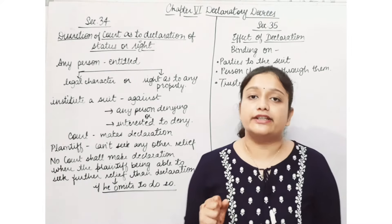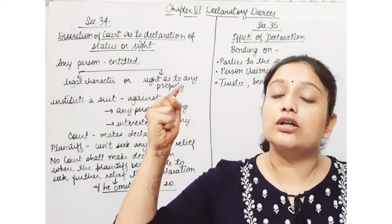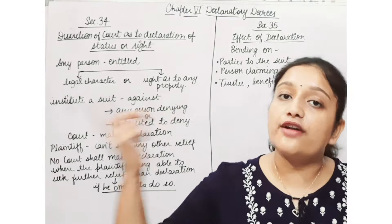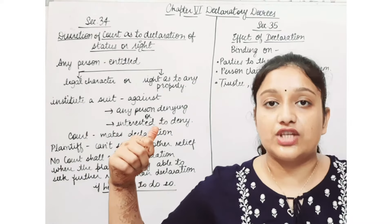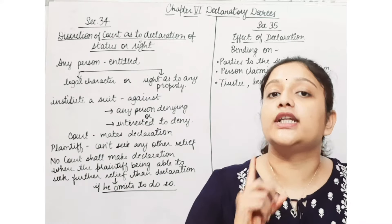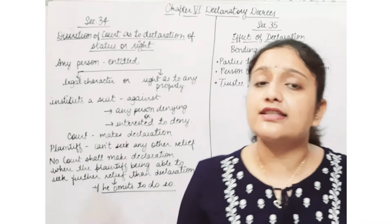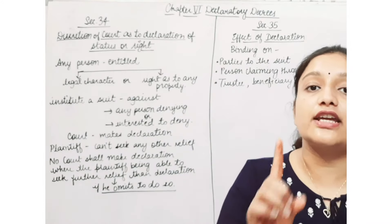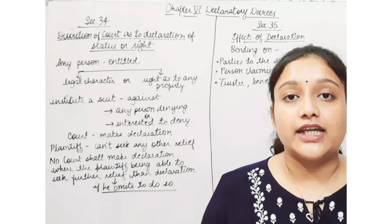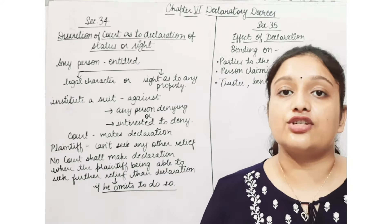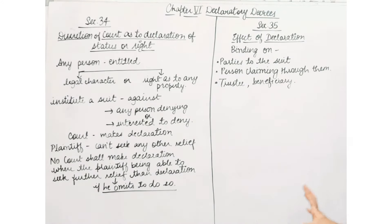If you have another option — that is, if you can seek any other relief from the court — and you don't seek it, the court will say we will not give you a declaration, because you have another option to seek relief. But if you omit or deny that option, you will be left with only this small relief of a declaration.